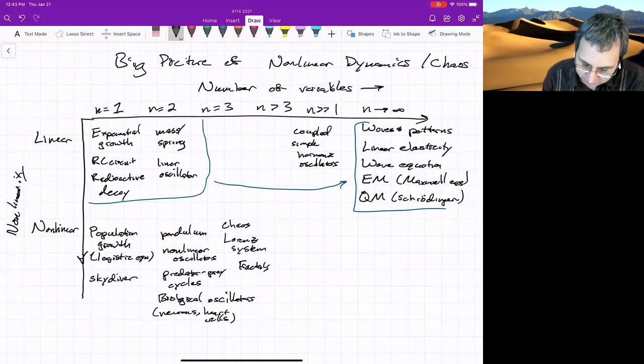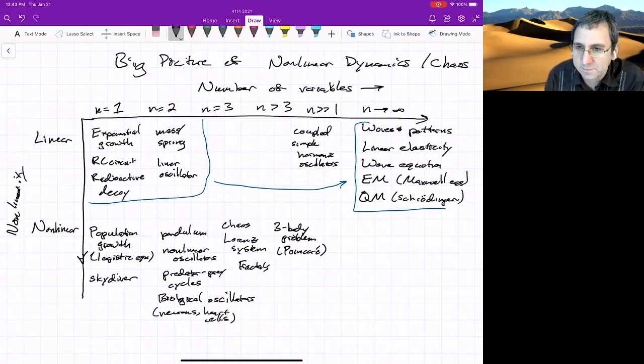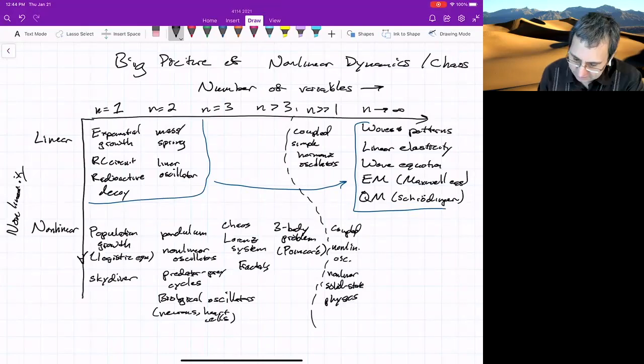N greater than three. Now we get to interesting stuff like the three-body problem that Poincaré worked on. And for that one, the minimum is N equals four variables to get that. So the three-body problem. I'm not necessarily going to group myself with Poincaré, he was one of my heroes though when I was grad school. As we go to larger and larger numbers, I mentioned coupled simple harmonic oscillators under N much greater than one. We could have coupled non-linear oscillators, non-linear solid state physics is in here. So things related to electronics down here in the lower right.